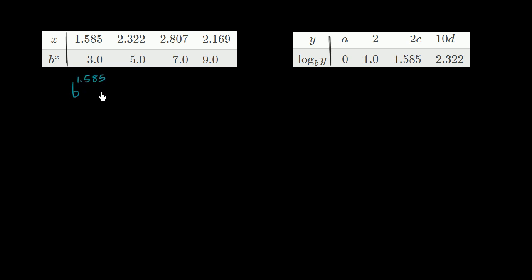So this is telling us that b to the 1.585 is equal to 3. Similarly, it is telling us that b to the 2.322 is 5, b to the 2.807 is 7, and b to the 2.169 is 9.